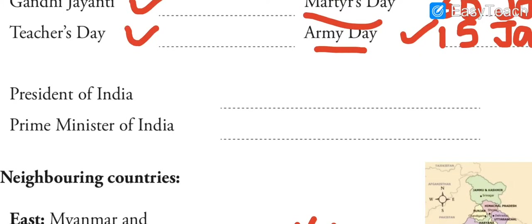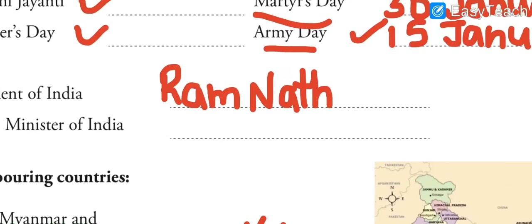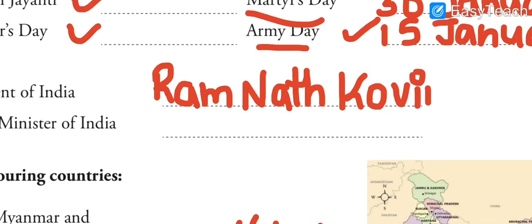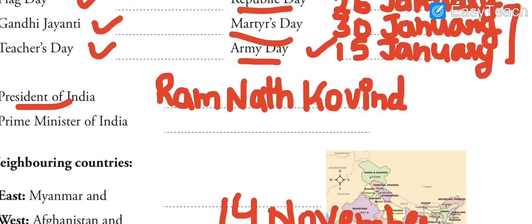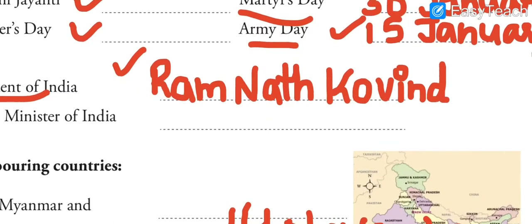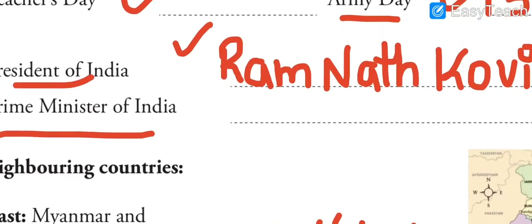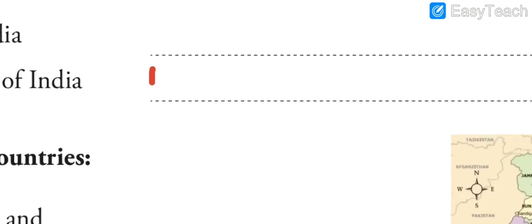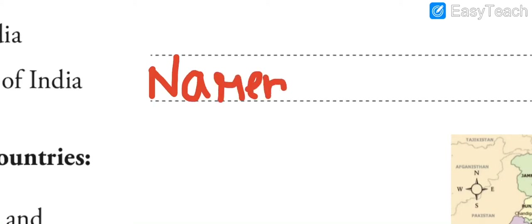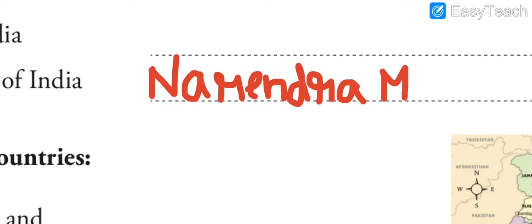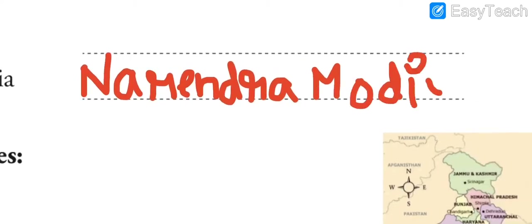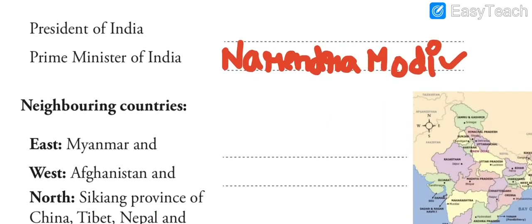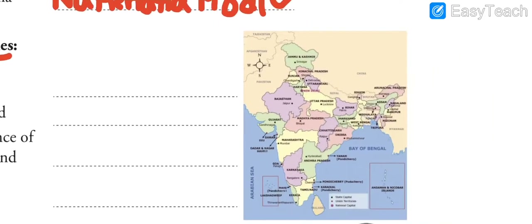Now, who is the President of India? The current President of India is Mr. Ram Nath Kovind. Next comes the Prime Minister of India - everyone knows him - he is Mr. Narendra Modi, the Prime Minister of India.